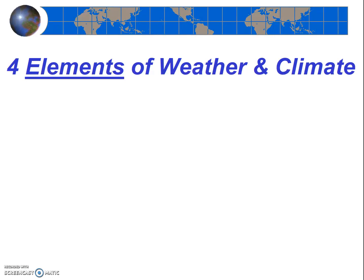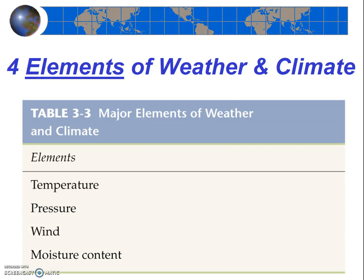The four elements of weather and climate are the basic components of weather and climate. To remember them, some students find it useful to simply consider a hypothetical weather report. Imagine the weather reporter saying: today the high temperature will be 68 degrees, there is a low pressure system coming in, and winds will be approximately 10 miles per hour from the west. So thus, we can expect rainfall this afternoon or evening of up to about 1.5 inches.